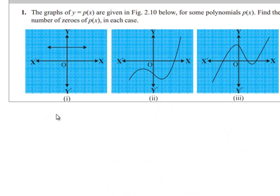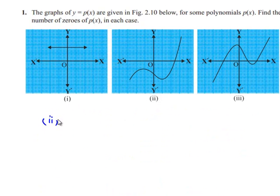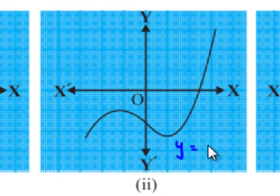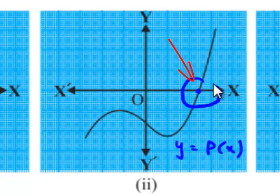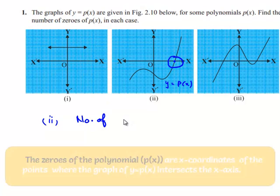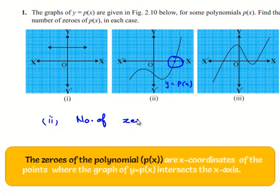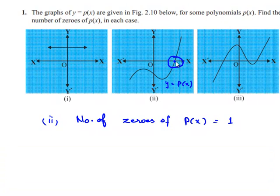Coming to the second case, the graph y is equal to p of x intersects the x-axis at one point. Therefore, the number of zeros of p of x in the second case is equal to one, because the graph is intersecting the x-axis at one point.